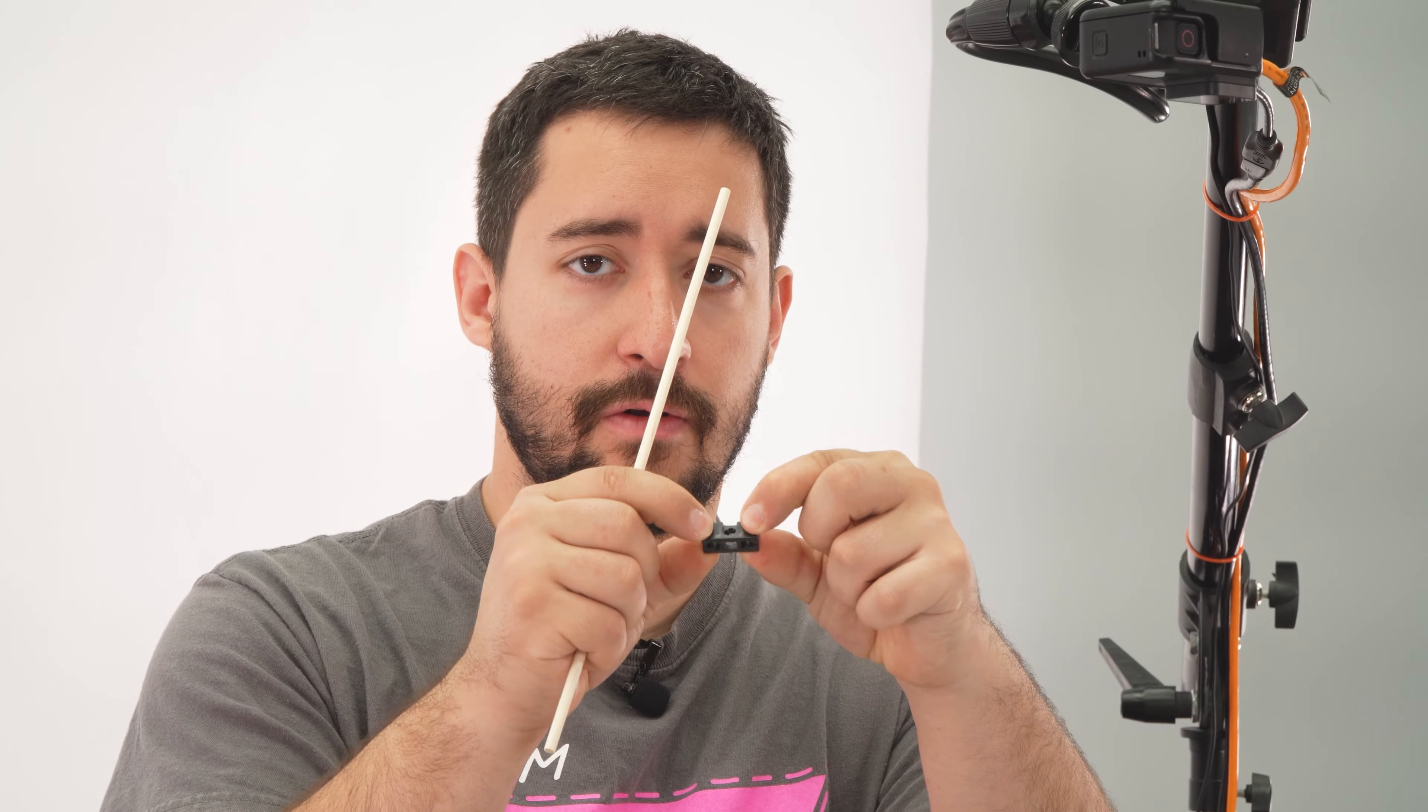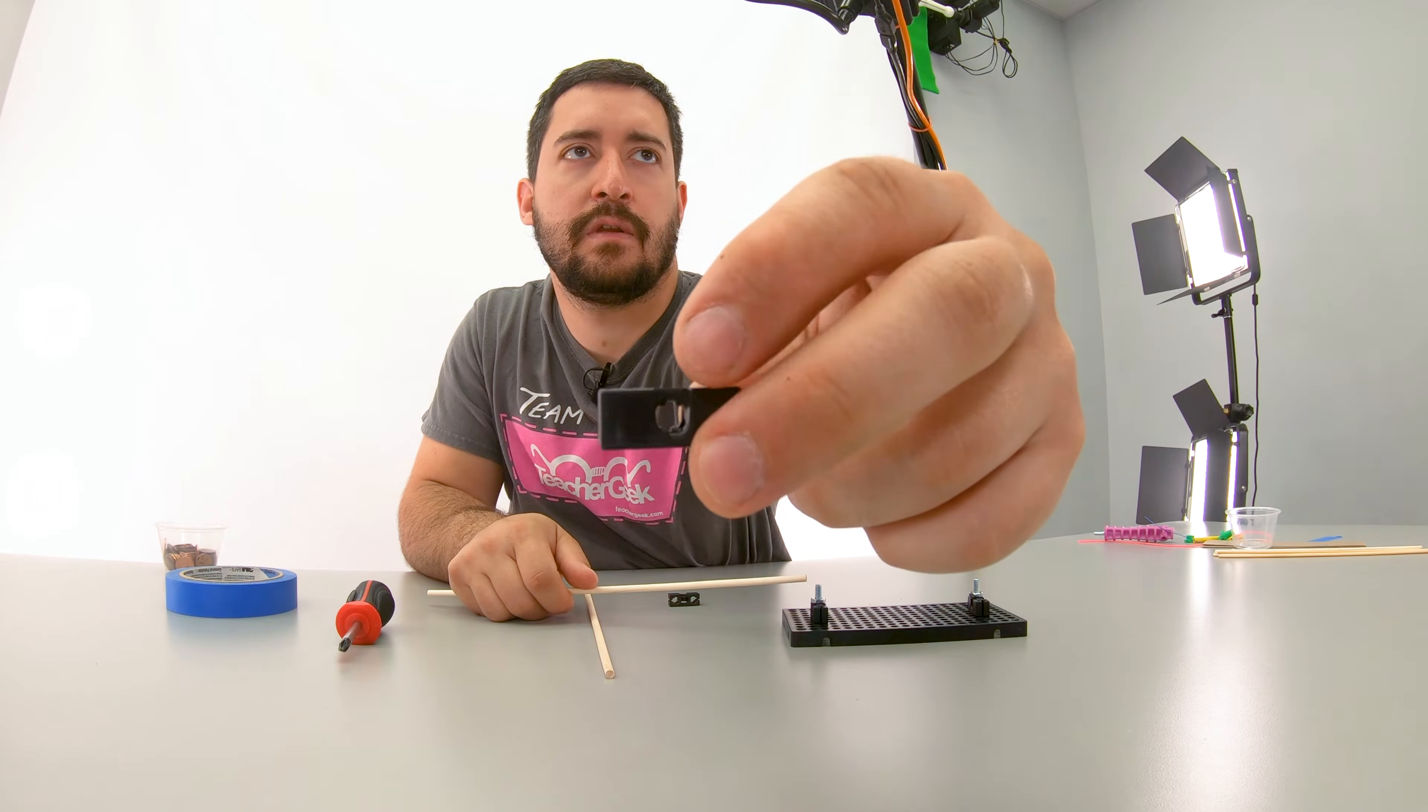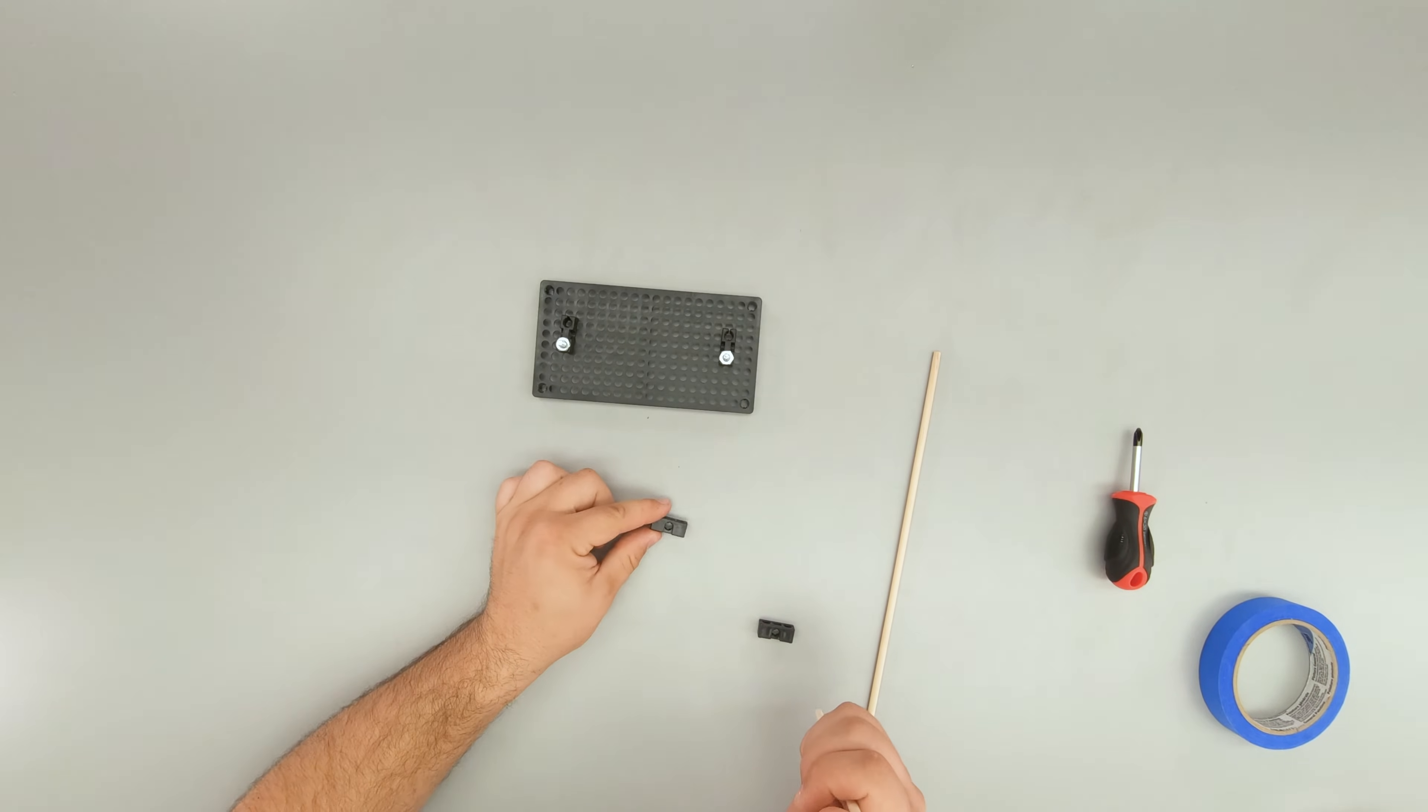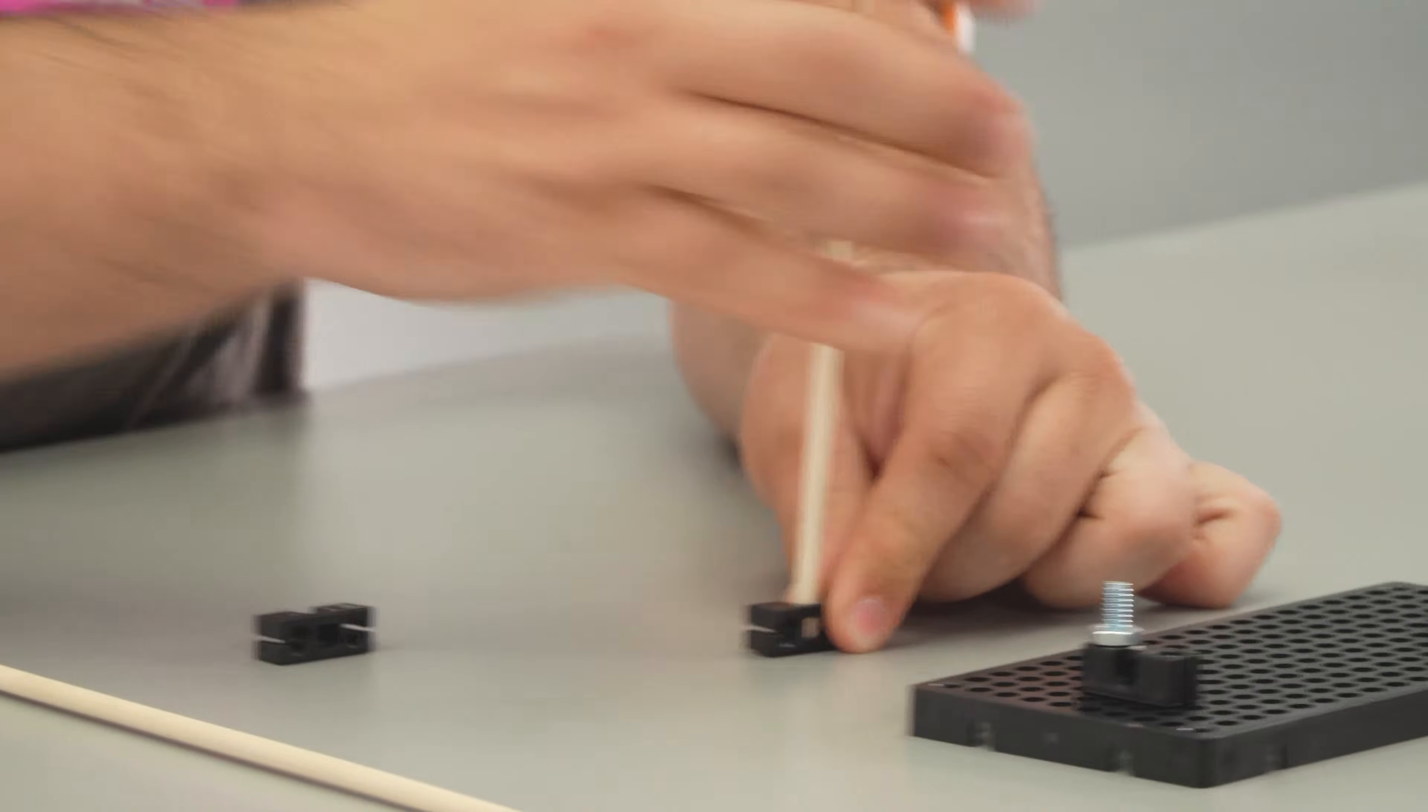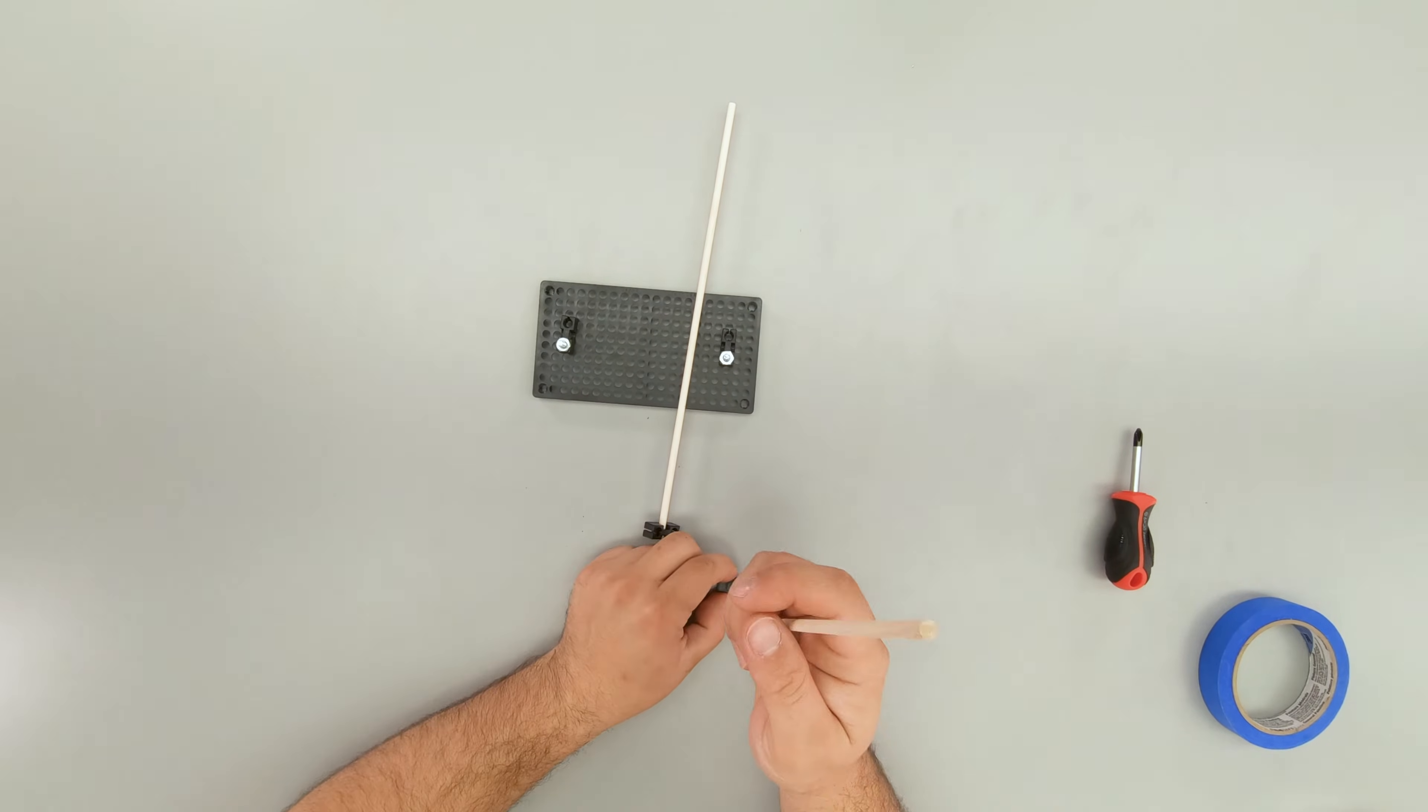Next, I'm going to take two 30 centimeter or 12 inch dowels, and I'm going to wiggle them through the center hole of a perpendicular block. I like to put my block flat on the table with that hole facing up, and then wiggle the dowel in. The center holes are a little tricky.